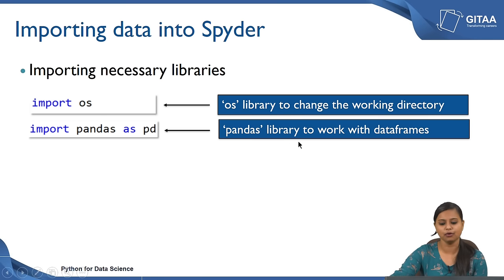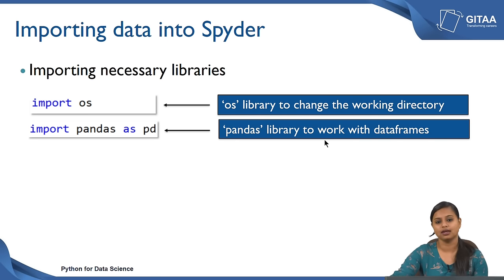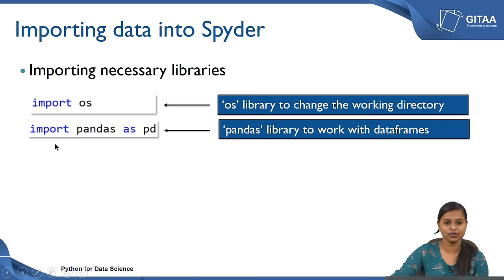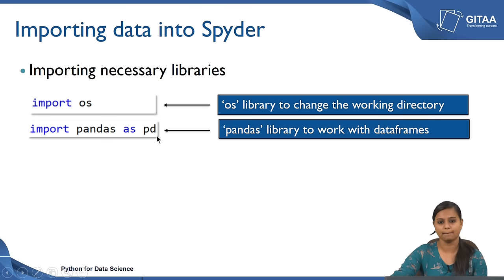We are importing the pandas library to work with data frames. Whenever we read any data into Spyder, it becomes a data frame — represented in terms of tabular data where each row is represented as a sample and each column is represented as a variable. That is why we are importing the pandas library as 'pd'. Here 'pd' is just an alias for pandas. Whenever I want to access any function from the pandas library, I can just use 'pd' with the dot operator to use the related functions.